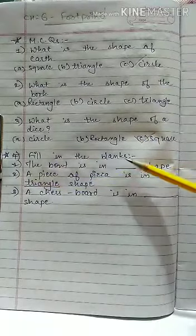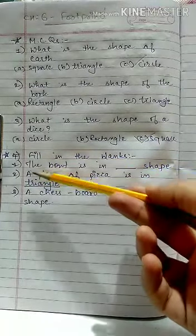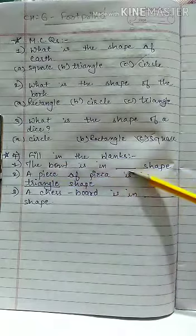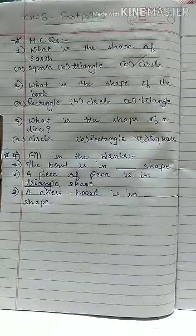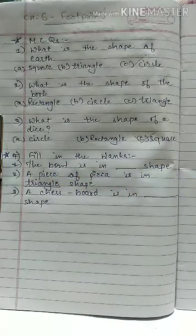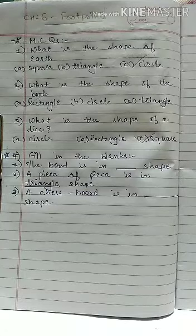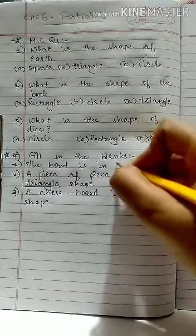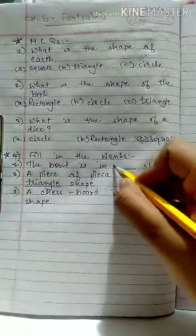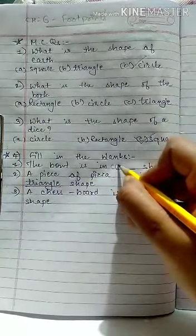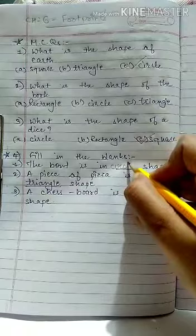Now moving towards fill in the blanks. First is: The bowl is in blank shape. What is the shape of the bowl? It is in circle shape, right? So here we have to write circle. The spelling is C-I-R-C-L-E, circle.